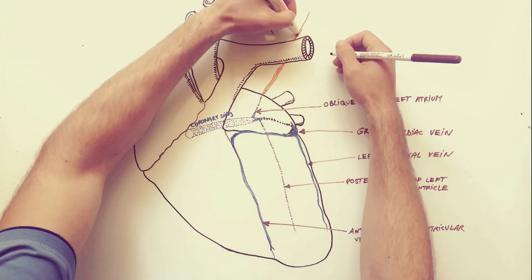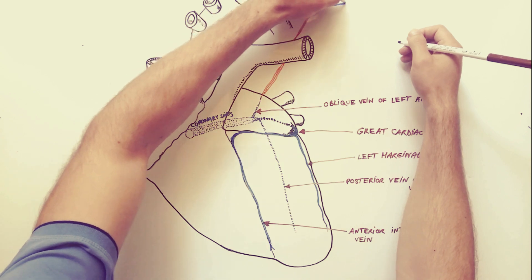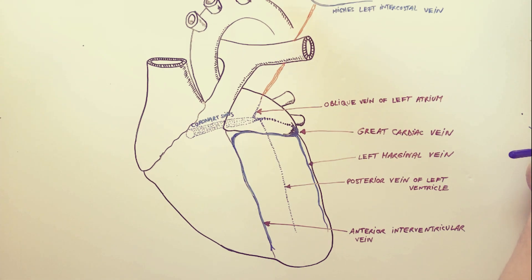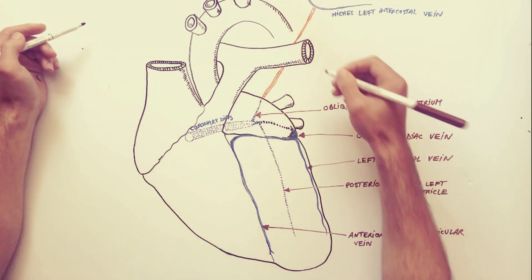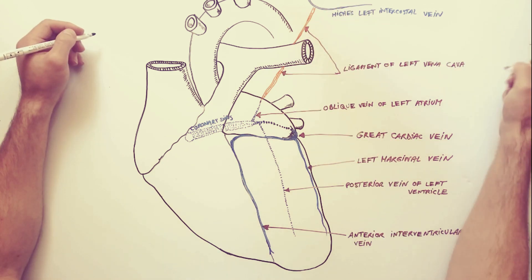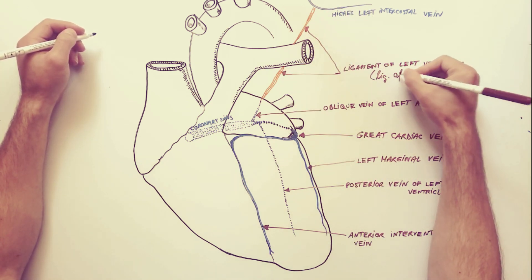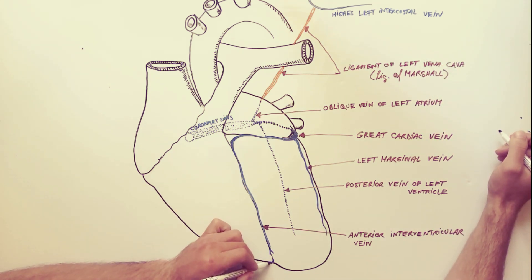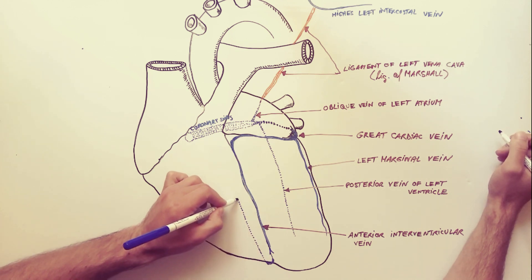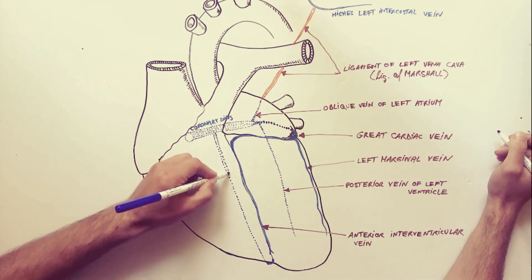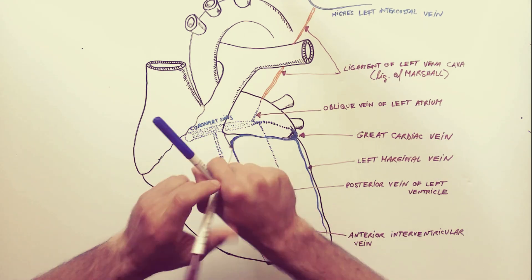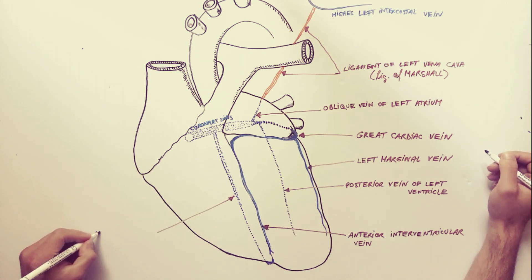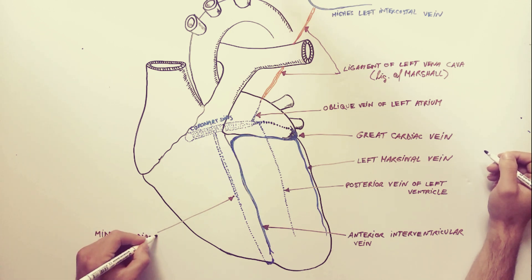In cases of persistent left superior vena cava, this vein is of course prominent. The ligament of Marshall connects the oblique vein of the left atrium with the highest left intercostal vein. The middle cardiac vein runs upward in the posterior interventricular groove in company with the posterior interventricular branch of the right coronary artery, and empties into the coronary sinus close to its termination. Sometimes this vein can be larger than the great cardiac vein.